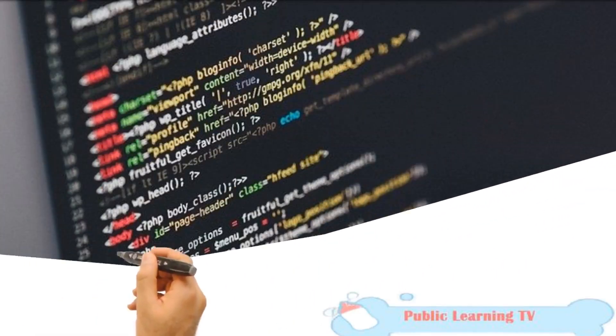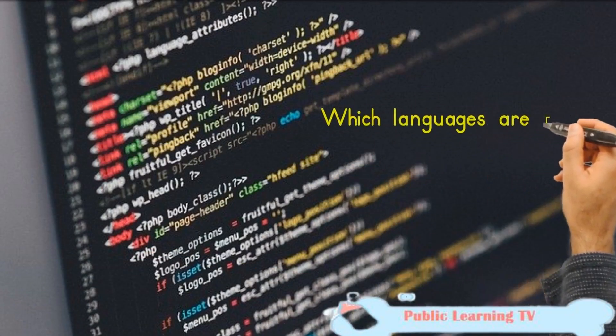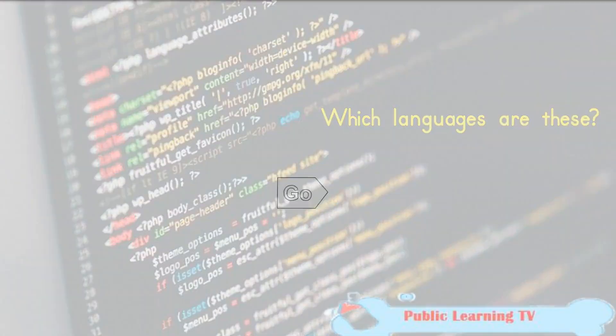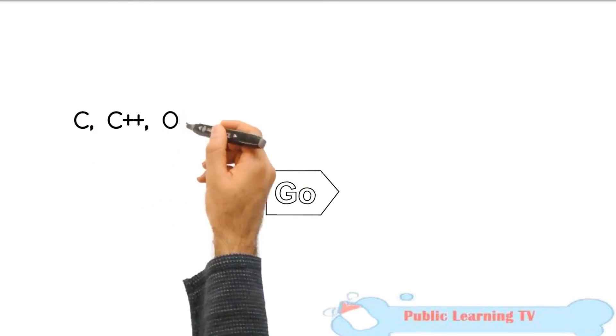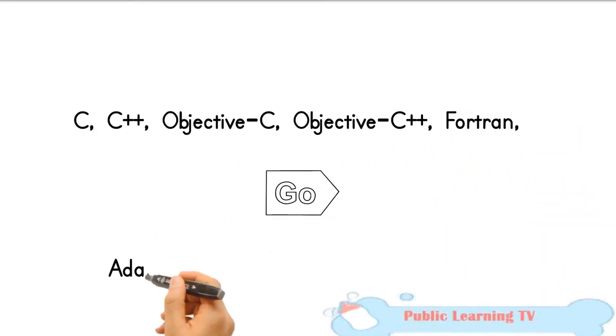Which languages are these? These languages currently include C, C++, Objective-C, Objective-C++, Fortran, Ada, D, Go, and BRIG (HSAIL). Could you please explain more about that abbreviation?